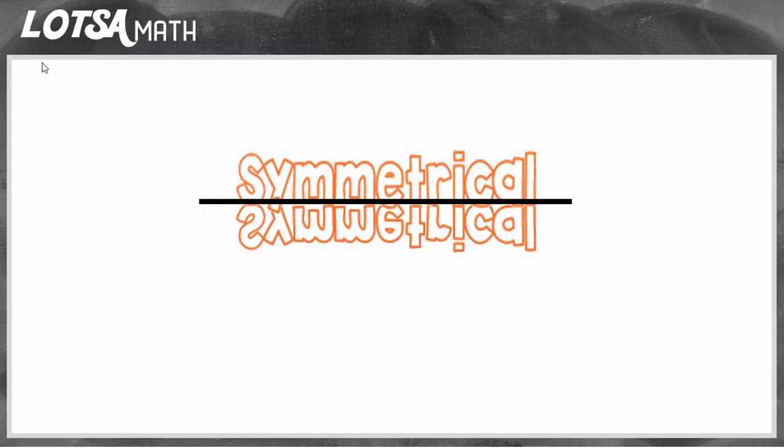So right here you can see the word symmetrical has a line of symmetry. The line is running down the middle of the shape and the two sides now form a mirrored reflection.